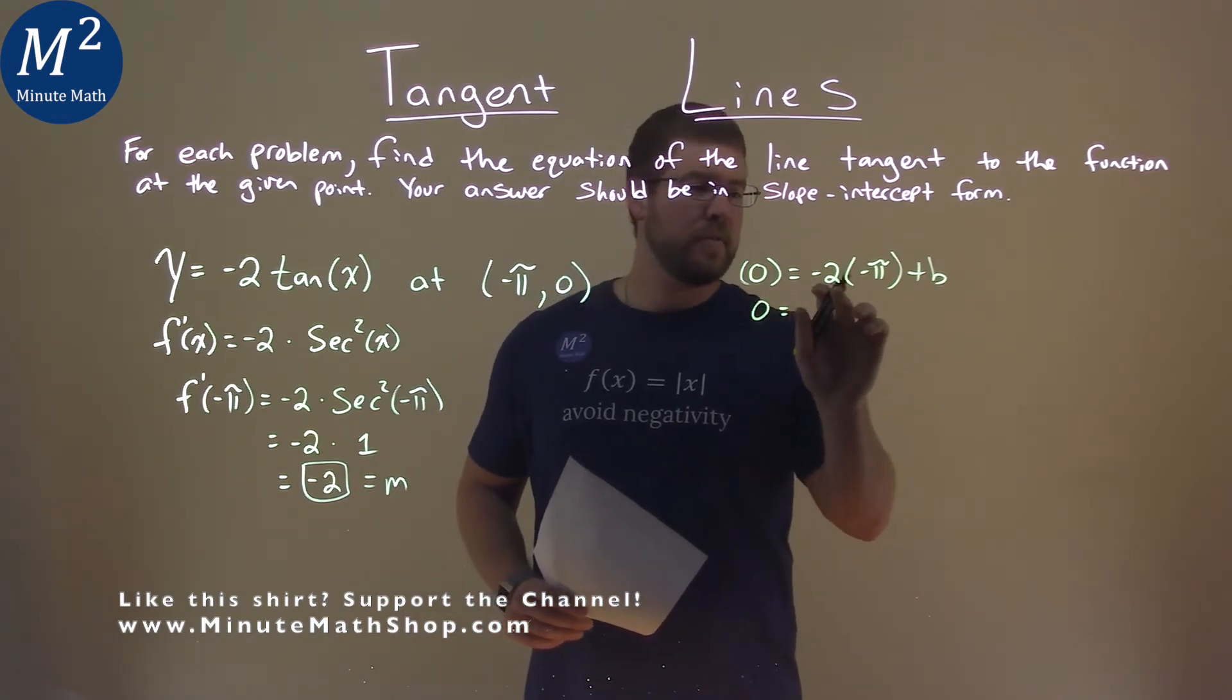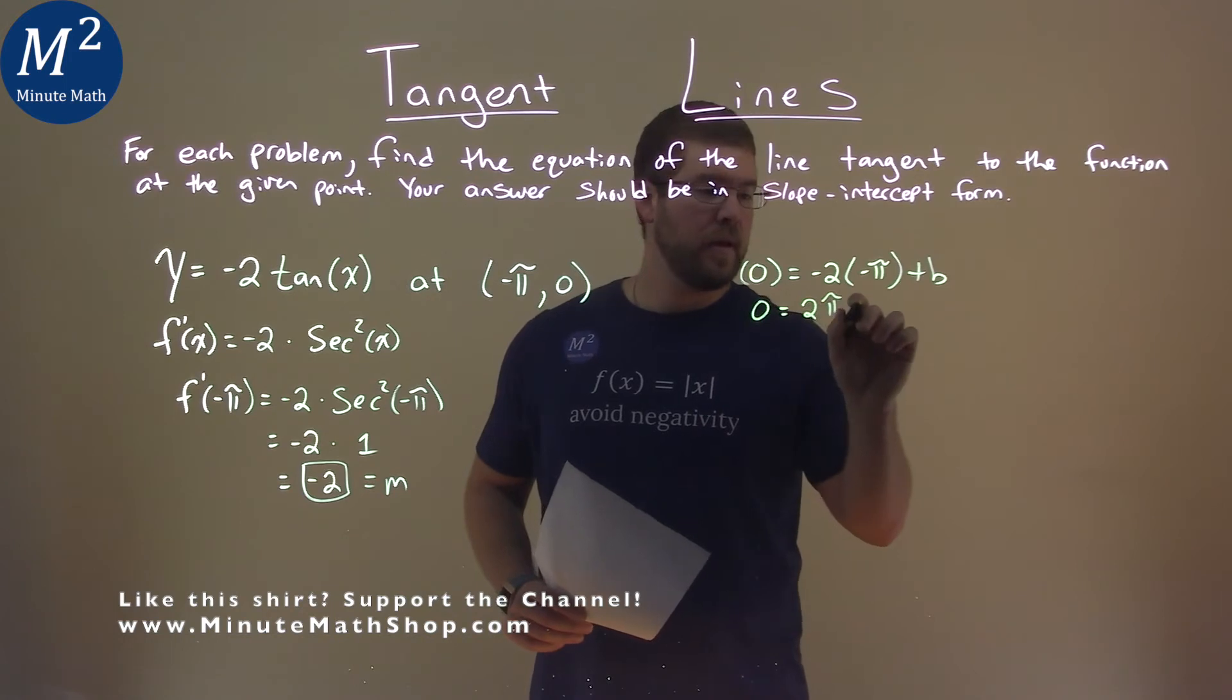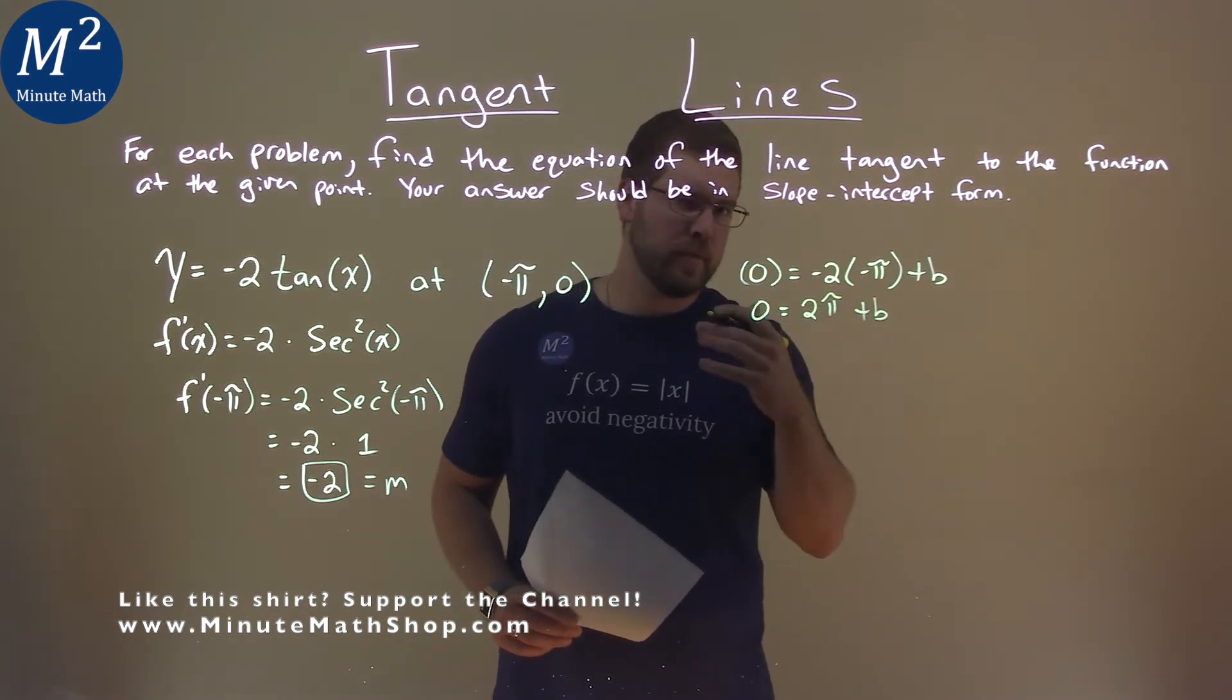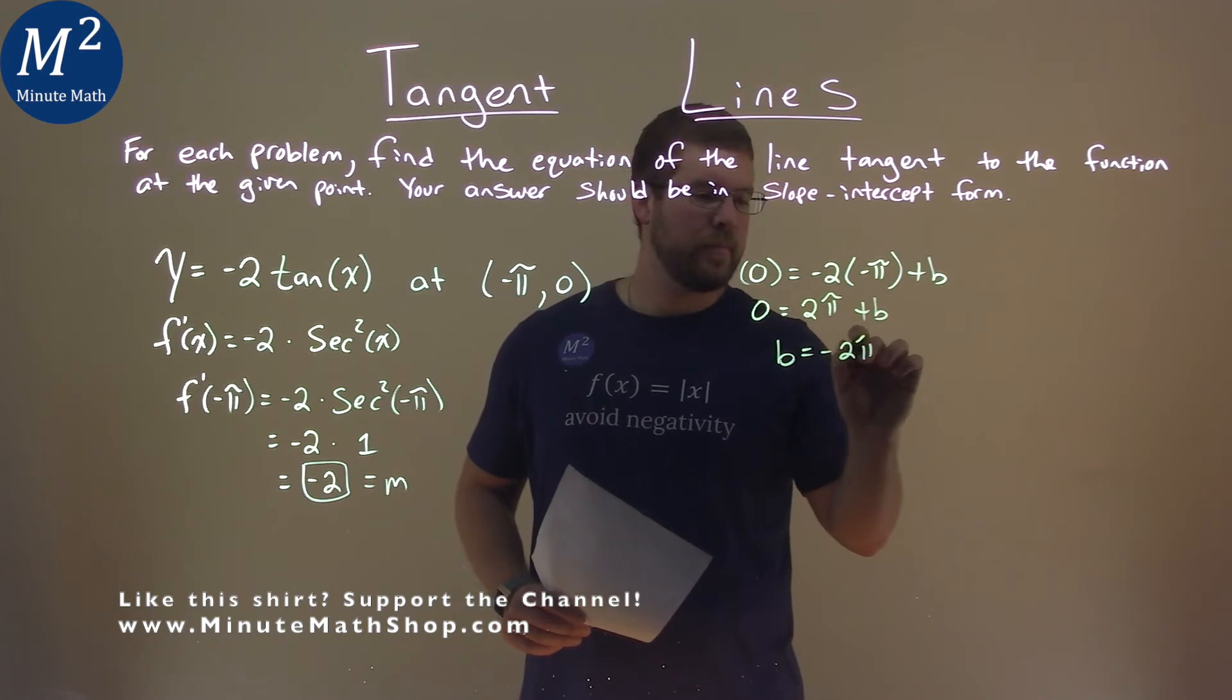Well, 0 equals negative 2 times negative pi, which is positive 2 pi plus b. Subtract the 2 pi from both sides, and b equals negative 2 pi.